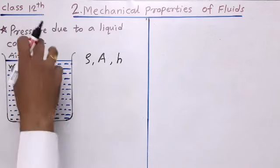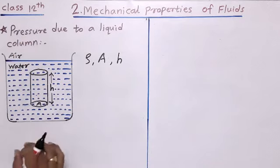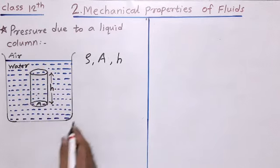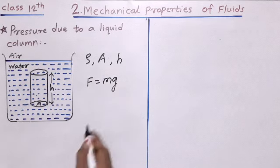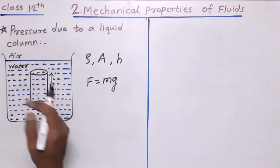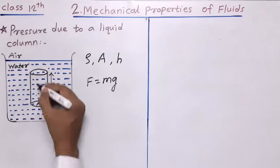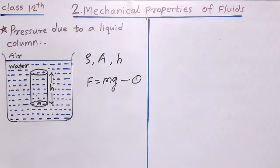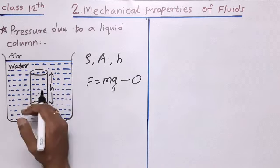As shown in the figure, the weight of the liquid inside the cylinder exerts some force at the bottom of the cylinder. The weight inside the liquid column exerts a force at the bottom, and this force is given by F = mg, where m is the mass of the liquid inside the cylinder and g is the acceleration due to gravity. Suppose this is equation number one.